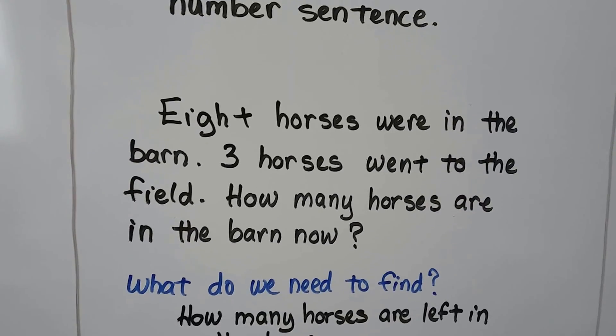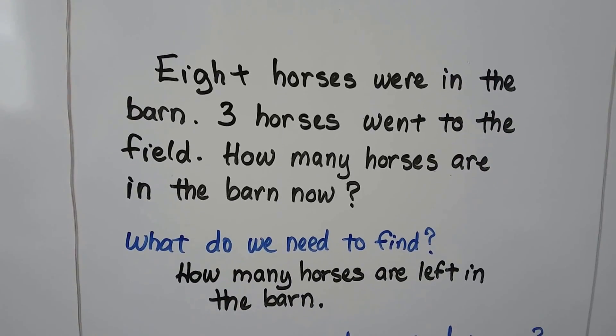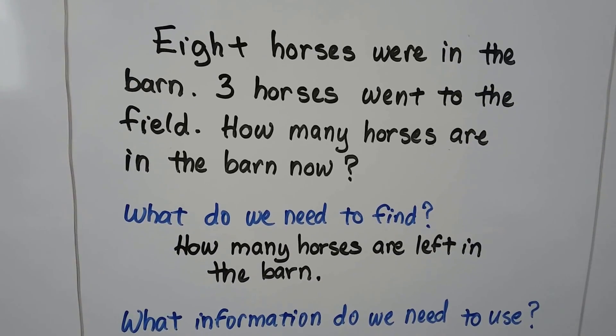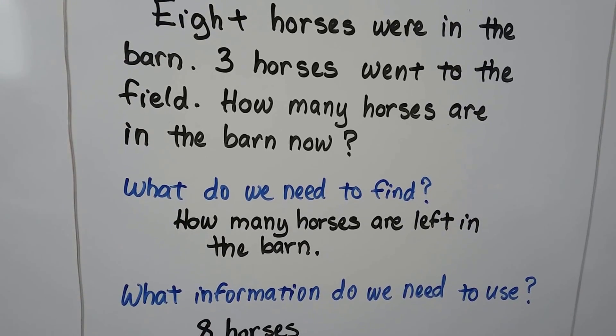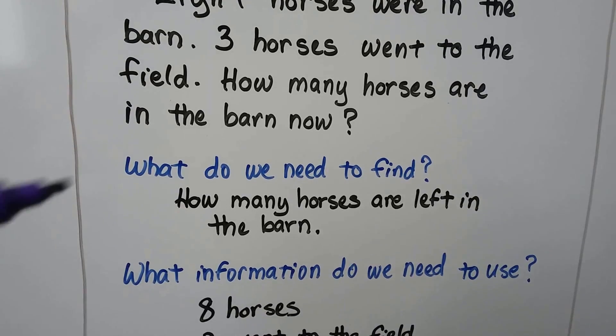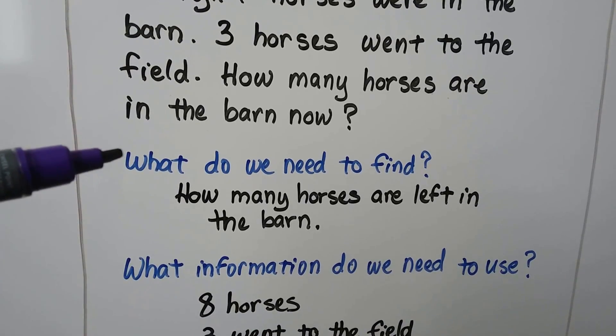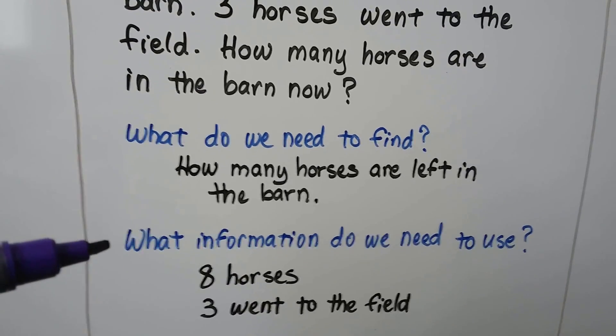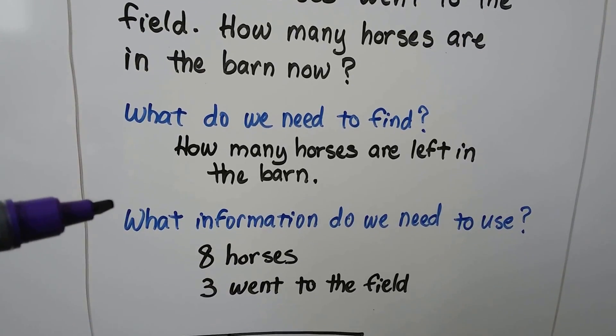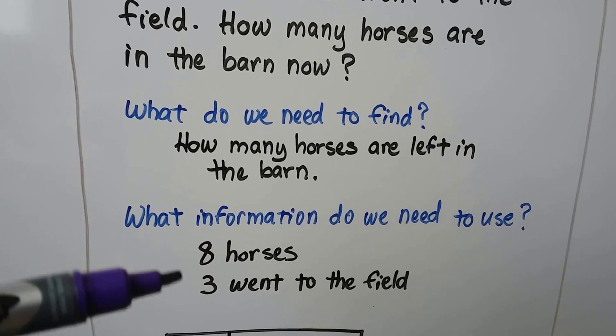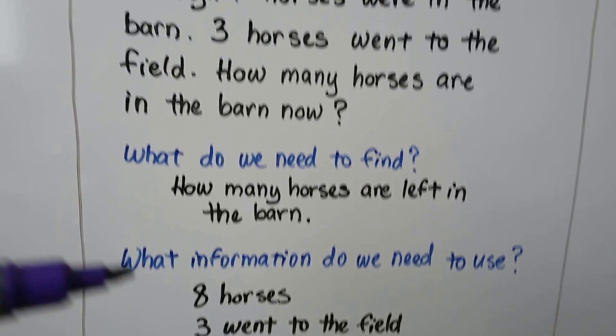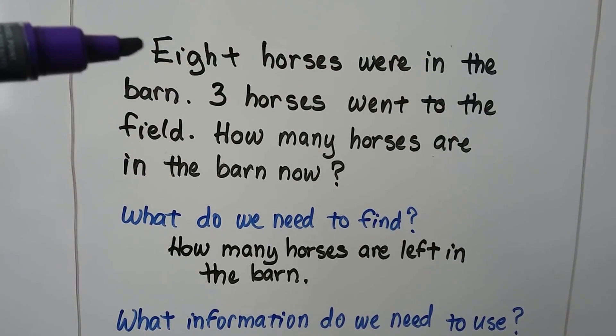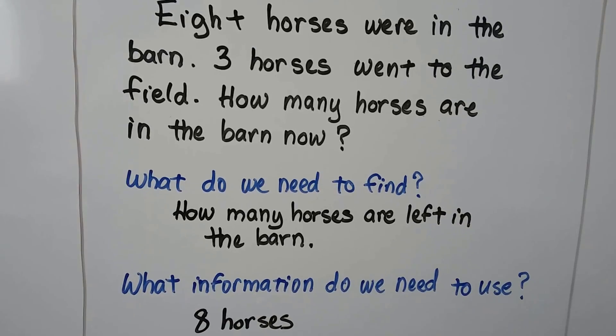Eight horses were in the barn. Three horses went to the field. How many horses are in the barn now? What do we need to find? How many horses are left in the barn? What information do we need to use? Eight horses, three went to the field.